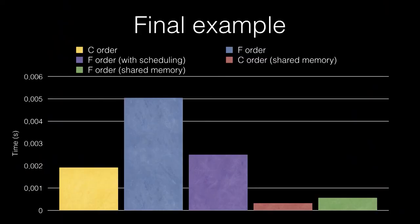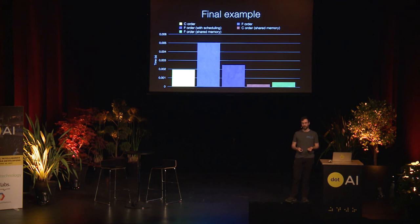The timing results show: the simple kernel with C-order matrices gives a reasonable time; with Fortran-order matrices, it's more than twice as slow. Tweaking the scheduling for Fortran order can get close to the original, but it's still slower. However, using shared memory tiling gives a much faster result — the tiny red bar for C-order with shared memory tiling is barely visible, and the slightly bigger green bar for Fortran order with shared memory tiling is still significantly faster than the naive approaches. This is possible because shared memory is much faster to read and write from inside a block.